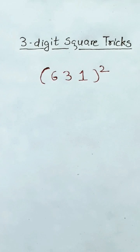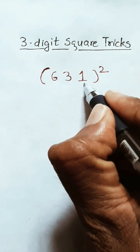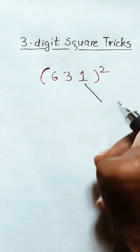Three-digit square tricks — you can find the square of any three-digit number using this trick. First, write the square of the last digit: 6 squared.